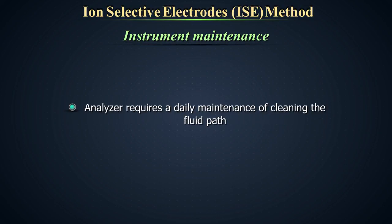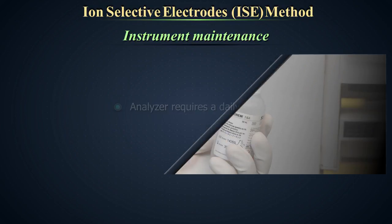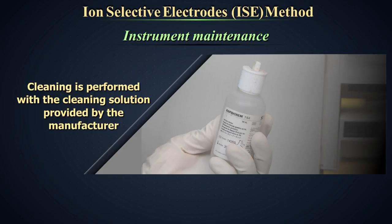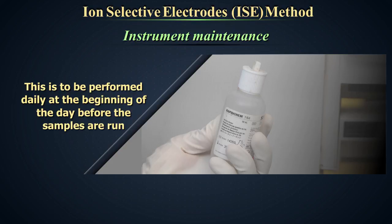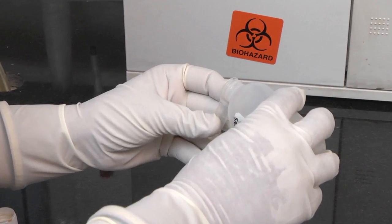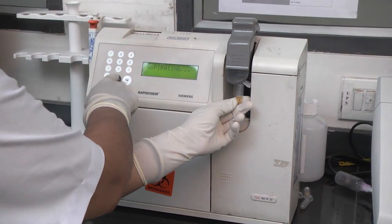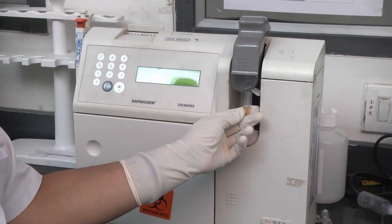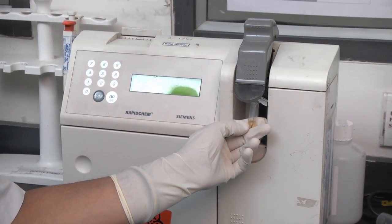Instrument maintenance. The analyzer requires a daily maintenance of cleaning the fluid path to remove protein deposits. Cleaning is performed with the cleaning solution provided by the manufacturer. This is to be performed daily at the beginning of the day before the samples are run. Take the cleaning solution in a clean container to avoid contamination of the remaining solution. Run the cleaning solution like a sample but in the daily cleaner mode. The cleaning cycle will be completed in 75 seconds.